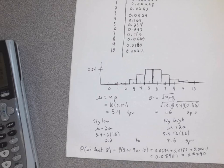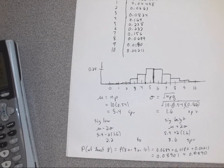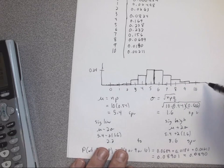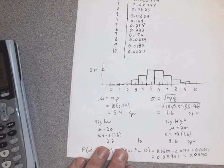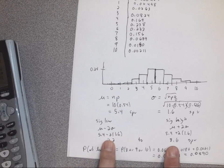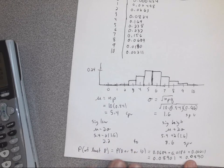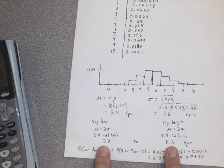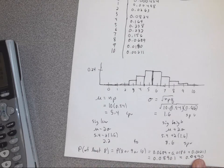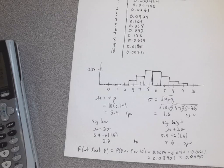Is 8 a usual value? If this percentage is bigger than 5%, it's a usual value — it lives within the 95%. Since 8.90% is bigger than 5%, it's not significantly high. Also look at the range of usual values, 2.2 to 8.6 — does 8 live in there? Yes. There are two ways to check it, and they work together in unison.